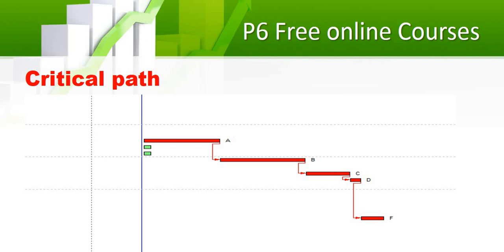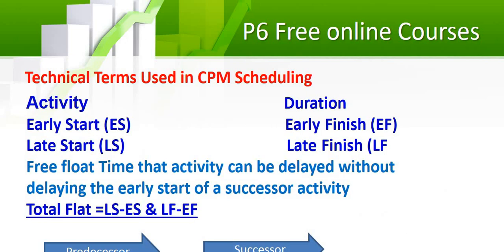Here is a small example showing how the critical path of a small project looks. The technical terms used in CPM include: activity — which is your task — and the relationships we can assign to each activity. For dates, you have four kinds: early start, early finish, late start, and late finish. You also have free float and total float. Free float is the time an activity can be delayed without delaying its successors — it is the buffer that activity has. The predecessor is called the predecessor and the following activity is called the successor. Total float is the difference between late start minus early start, or late finish minus early finish.